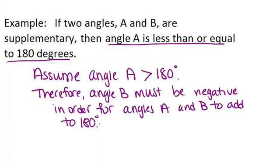Now there's where you get to a contradiction. This thing I just said, angle B must be negative. That doesn't make sense. How can you have an angle that's negative? So that's where you have your contradiction in your reasoning.